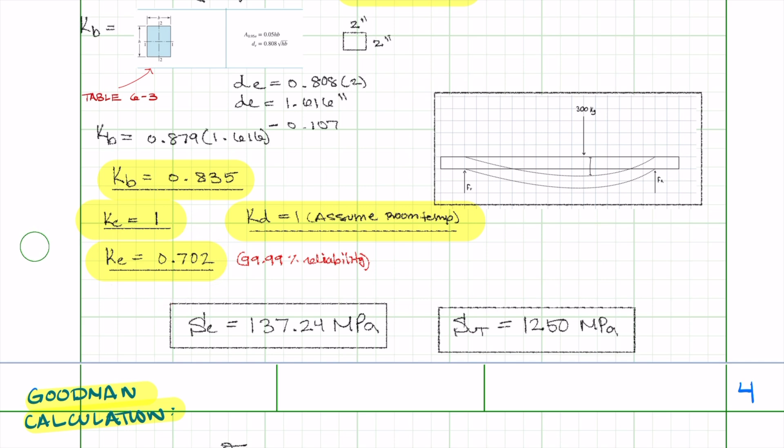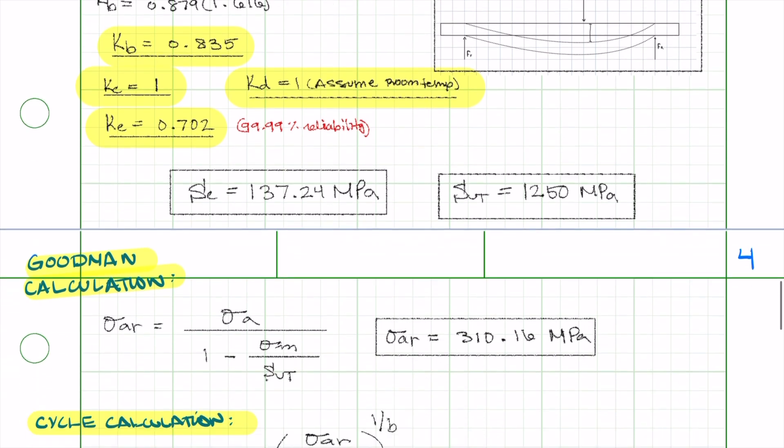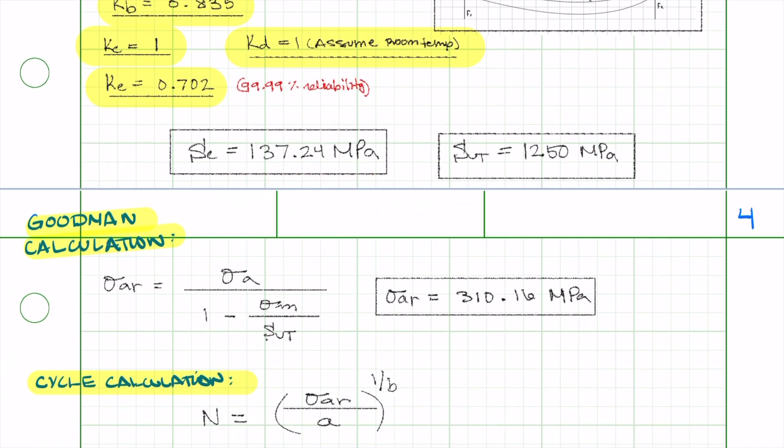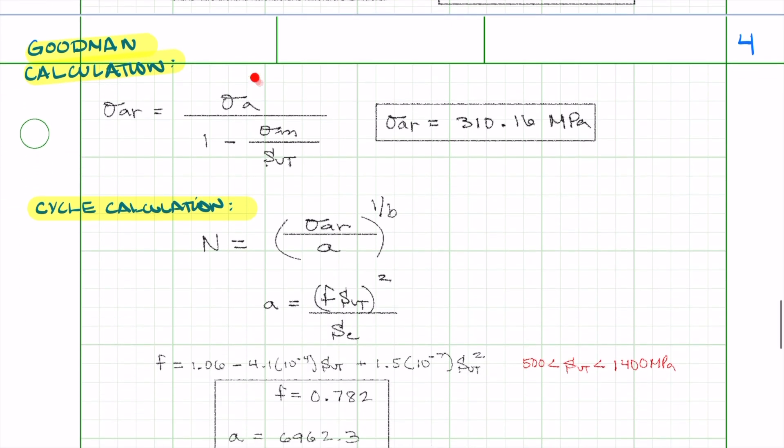KE is 0.702 for reliability of 99.9%, and so SE is calculated as 137.24 MPa. And using sigma A, sigma M, and SUT we got above, we can calculate sigma AR.